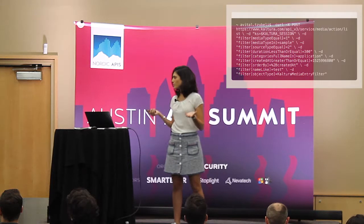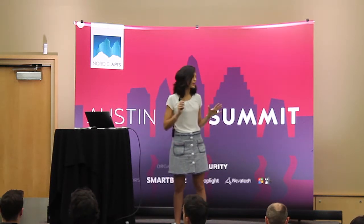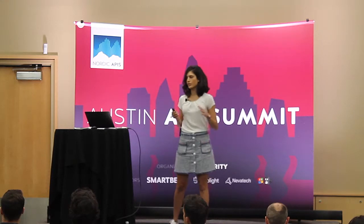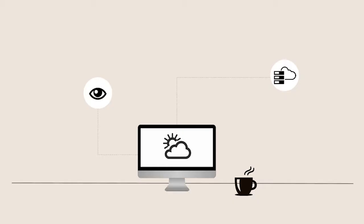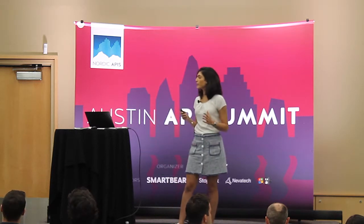So the obvious answer becomes: write a client library, right? But before you can do that, you need to ask yourself these questions. First of all, how exactly is your API going to be used? Do you have something like a simple data API, a one-trick pony? Something like the weather API that has one or two endpoints? Maybe you don't even need a client library.